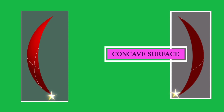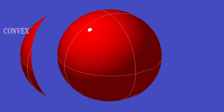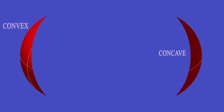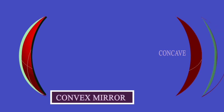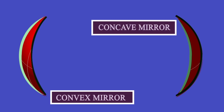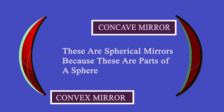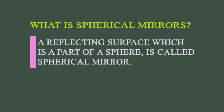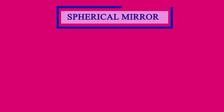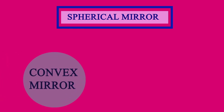Convex surface is simply the opposite of concave, so we can remember both surfaces. If there is a reflecting surface on the convex surface with a coating, then it will be a convex mirror. Similarly, we get a concave mirror. These are spherical mirrors because both these mirrors are parts of a sphere. A reflecting surface which is a part of a sphere is called a spherical mirror.